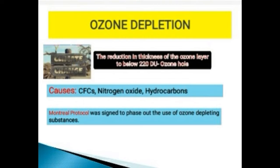In September 1987, 34 industrialized nations signed the Montreal Protocol. It was aimed at phasing out the use of ozone-depleting substances and developing non-toxic substitute substances. There are specific steps to follow to protect the ozone layer.